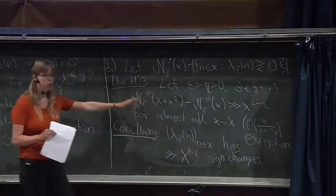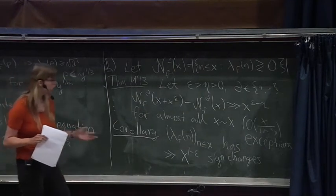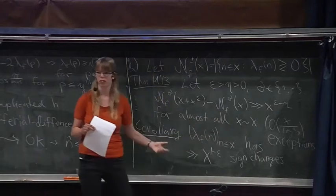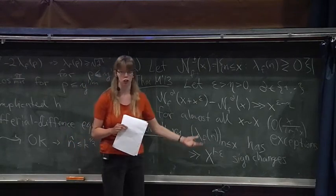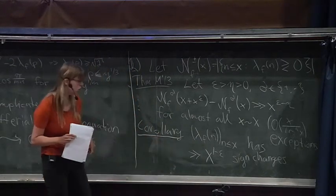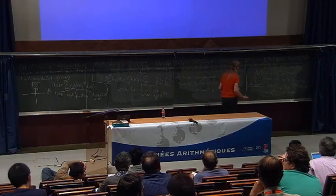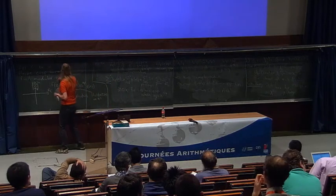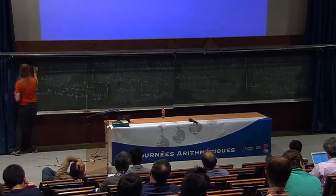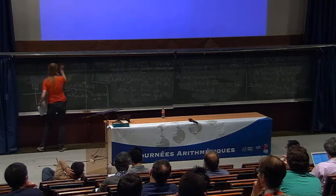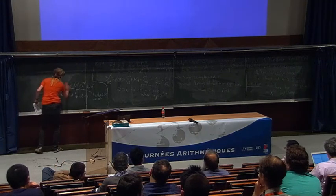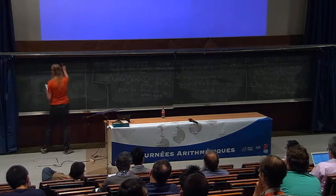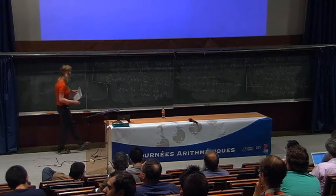Almost all very short intervals contain positive coefficients and almost all very short intervals contain negative coefficients, so there must be lots of sign changes. The sequence λ_f(n) up to x has at least x^(1 − ε) sign changes. This theorem improves a very recent work by Wu and Chai, who showed that if you take ε to be at least 3/7, then a positive proportion of these intervals contains positive and negative coefficients. This is quite a bit better: we can take any ε and we get that almost all intervals, instead of just a positive proportion, contain sign changes.